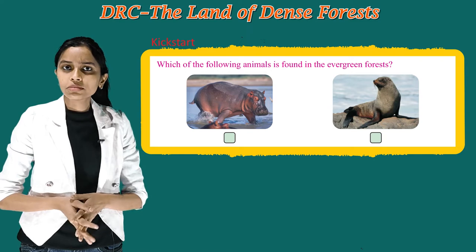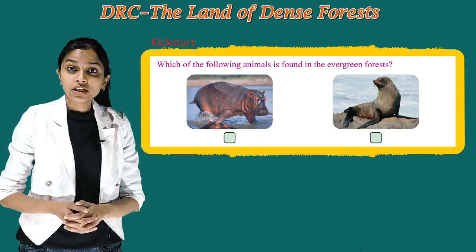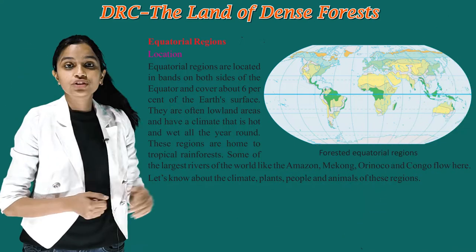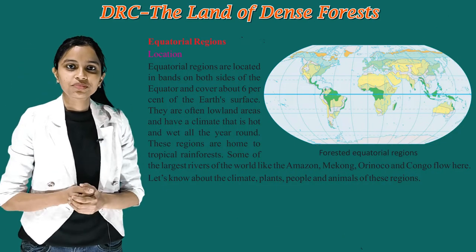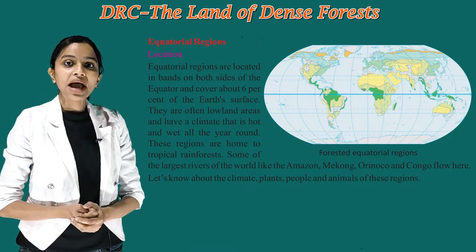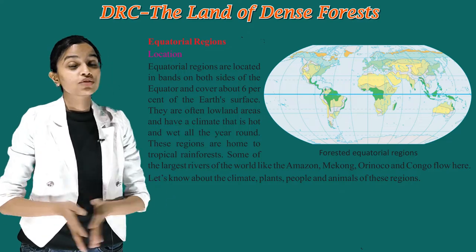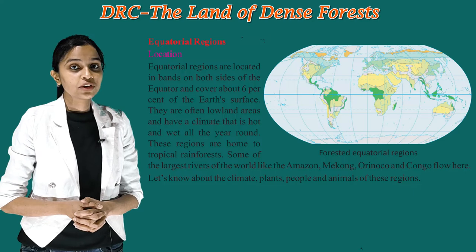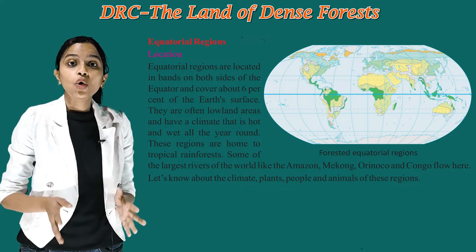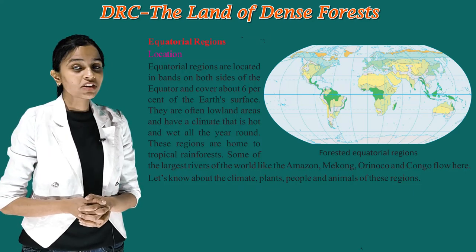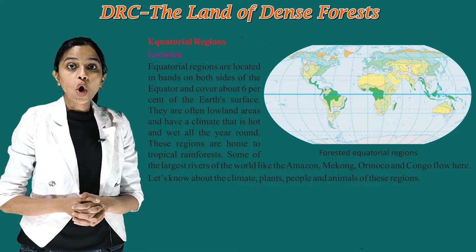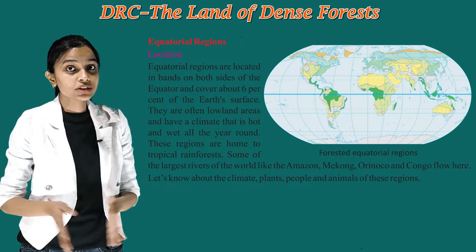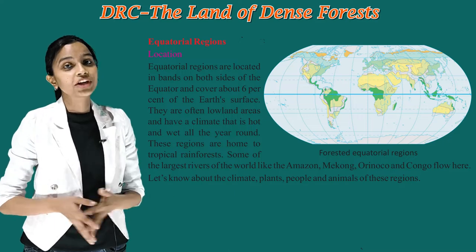Which of the following animals is found in the evergreen forests? Equatorial regions, location. Equatorial regions are located in bands on both sides of the equator and cover about 6% of the earth's surface. They are often lowland areas and have a climate that is hot and wet all the year round. These regions are home to tropical rainforests.